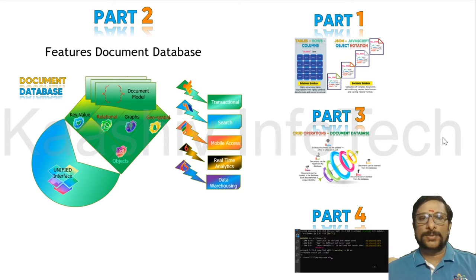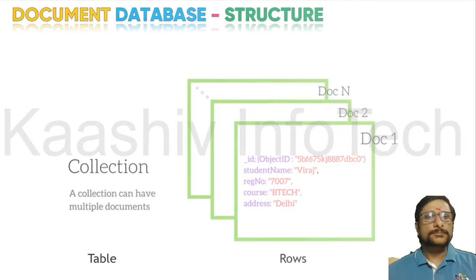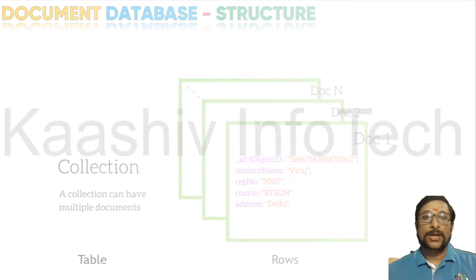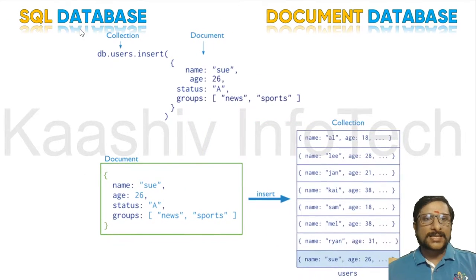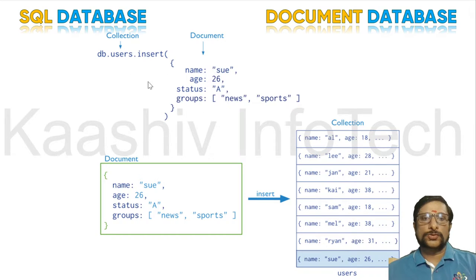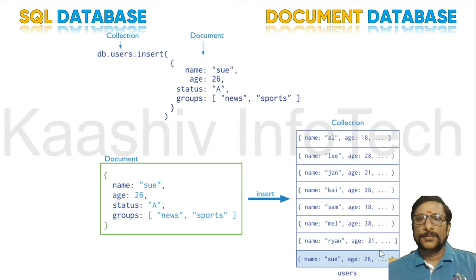Let's move on to the features of document database. As I told you, the table is called a collection, and the rows are called individual documents — that is the structure. Over here you got SQL database and over here document database. This is a JSON document and this is your collections — your table format. Here is a MongoDB command: db.database.uses_as_a_table.insert — this is the data, this is a document, it is getting inserted. I will tell you the detail in our live implementation.